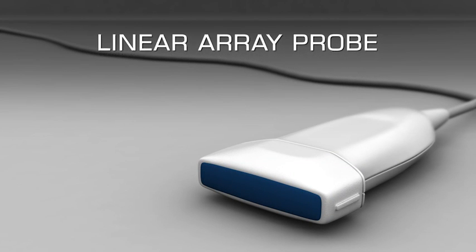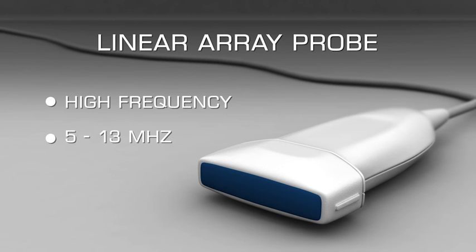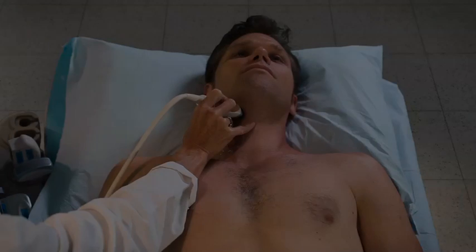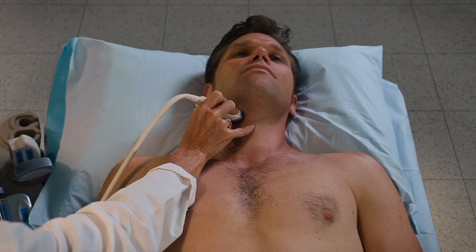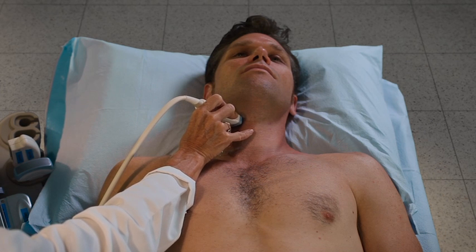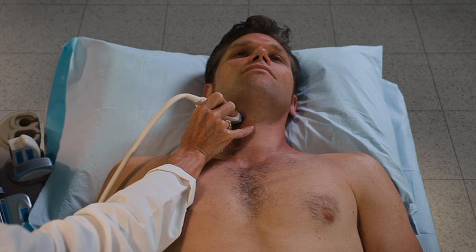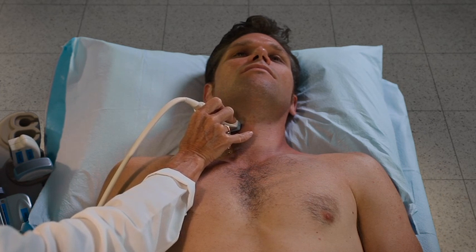A high-frequency linear array probe with a range of 5 to 13 megahertz is suitable for scanning the deep vessels of the neck and the thyroid gland. Select the carotid preset on the ultrasound device.